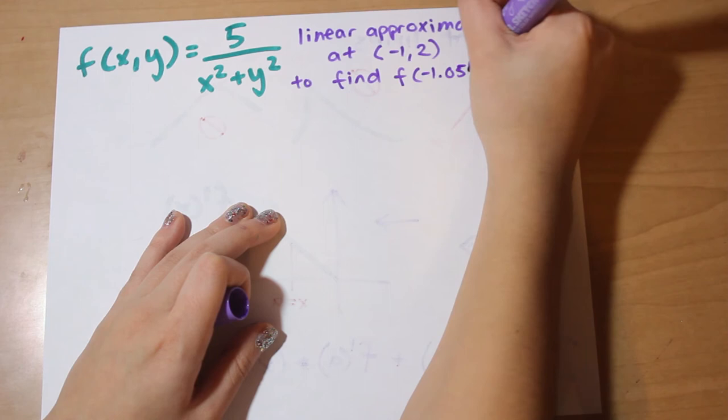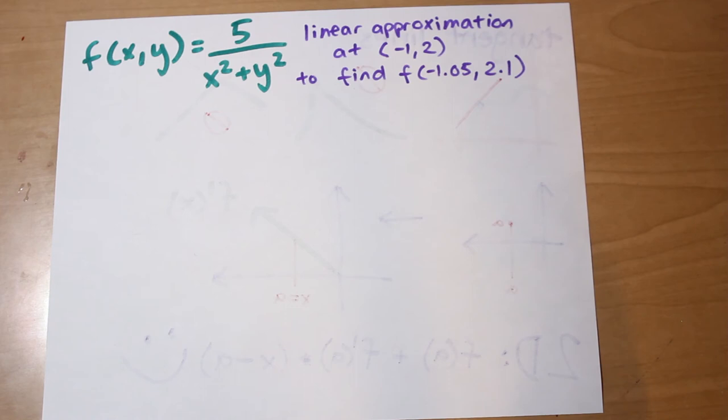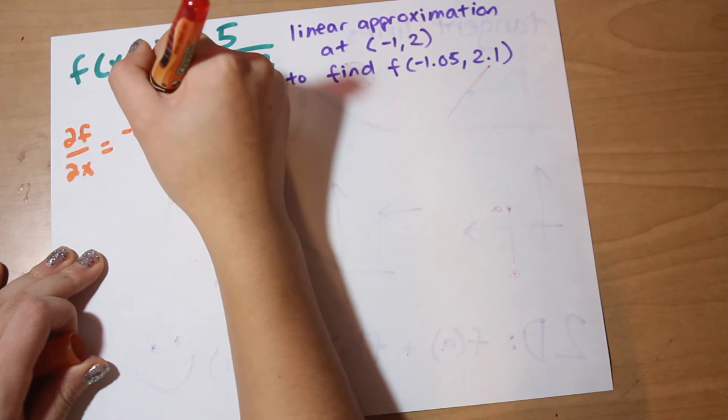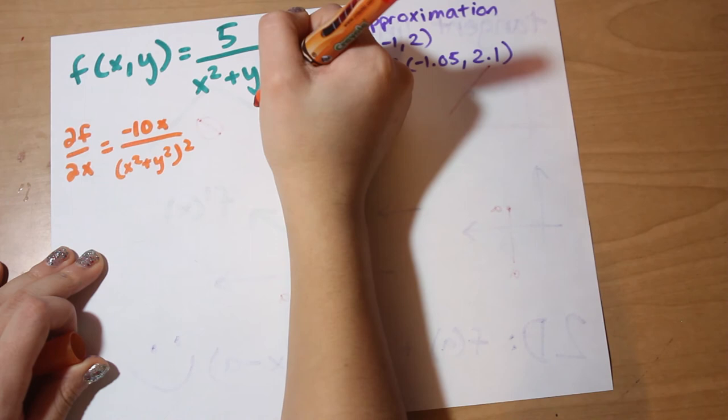And remember, the reason we want to use linear approximation here is because those aren't pretty numbers, and it would be easier to use linear approximation than to try to solve that out if you didn't have a calculator. Moving on, the first thing we're going to do is find the partial derivatives of each of the variables. And here they are. Nice.